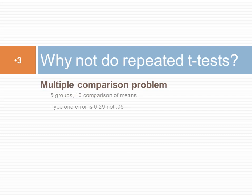Recall that we have shown you how to do a t-test where we can compare two groups at a time. Now, a person might say, well, if we have two groups, why don't we just do repeated t-tests? Repeated t-tests increase the chance of type 1 error because of multiple comparison problems.